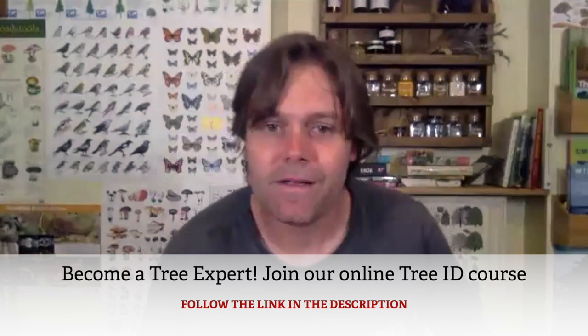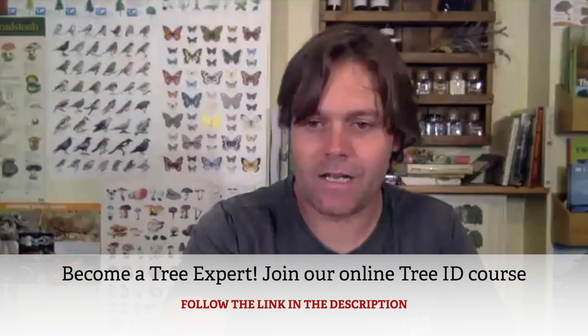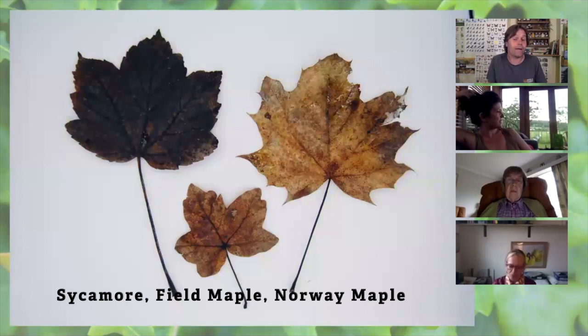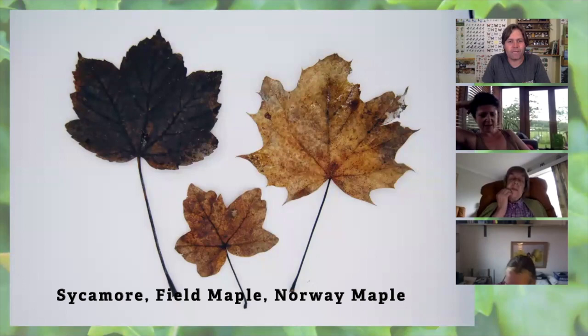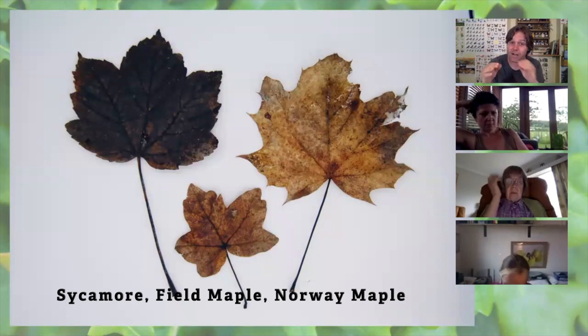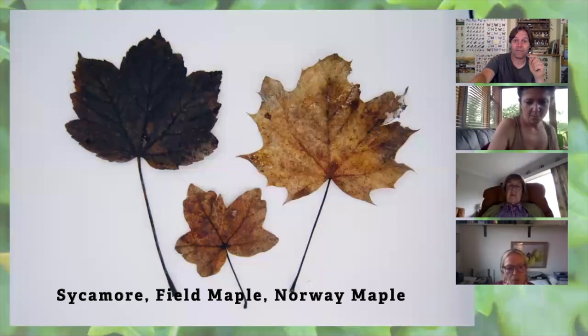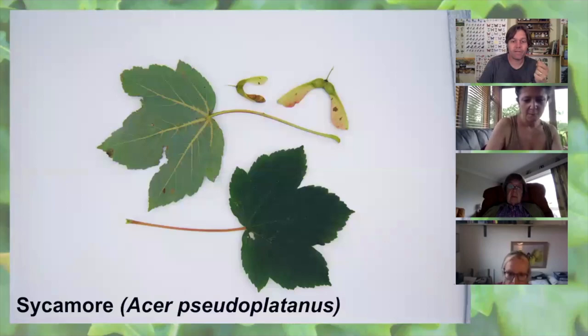Let's look at the differences between the three most common maples. Here's an autumn picture with all three side by side — imagine them green. The field maple is the smallest; sycamore is on the left, darker in autumn; and Norway maple is on the right, a much more dramatic leaf all around. The size difference is immediately obvious: field maple is much smaller than the other two. Sycamore — the one most of us are familiar with — is a non-native but naturalized, growing up to about 35 metres tall, with leaves up to about 15 cm long.